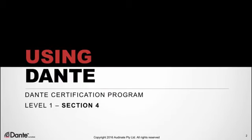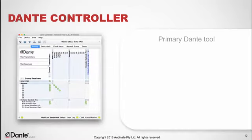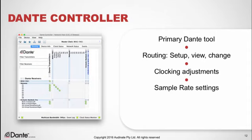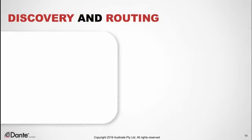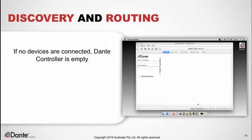This is part of the Dante certification program, Level 1, Section 4. Dante Controller is free software from Audinate that works with all Dante-enabled devices from any manufacturer. It is the primary tool used to set up and use all Dante networks. Dante Controller is used to set up, view, and change audio signal routing, configure clocking, and adjust individual device parameters such as sample rate. When Dante Controller is launched with no devices connected, it appears empty.